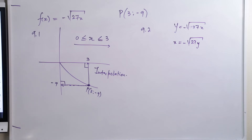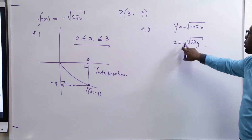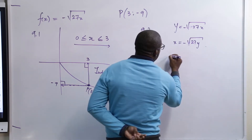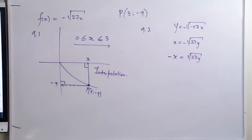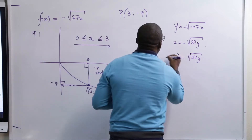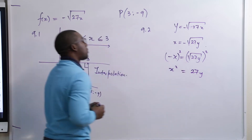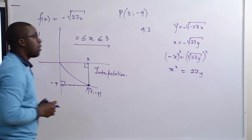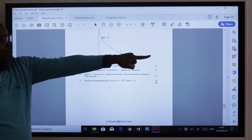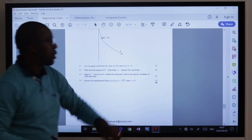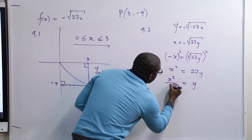Step 2: perform algebraic manipulation to make Y the subject. We first get rid of the negative, giving negative X equals root of 27Y. Then square both sides to remove the root: 27Y equals X squared. Finally, divide both sides by 27, leaving Y equals X squared divided by 27. This is the form they wanted.